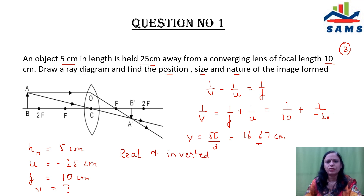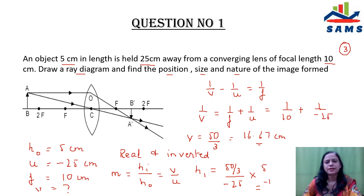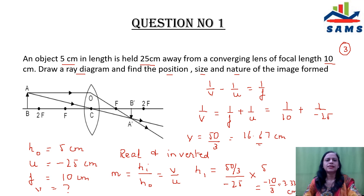Now we also need to find the size of the image. Using the magnification formula hi/ho = v/u, we get hi = (v/u) × ho. Substituting v = 50/3, u = −25, and ho = 5 — not missing the sign convention — we get hi = −10/3, which is equal to −3.33 cm. So the exact answer for the image height is −3.33 cm.